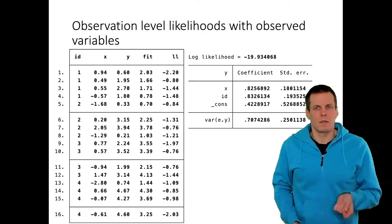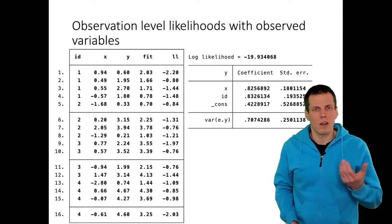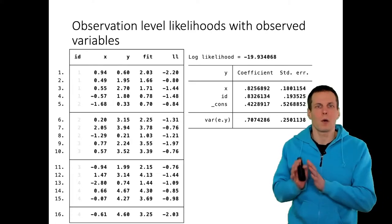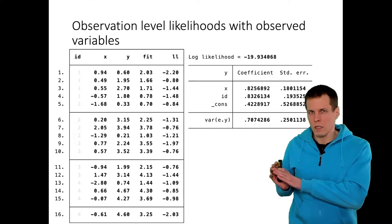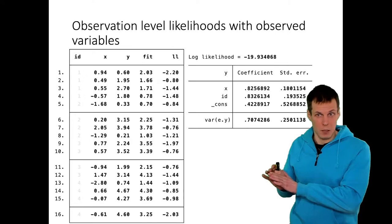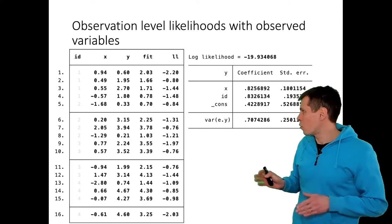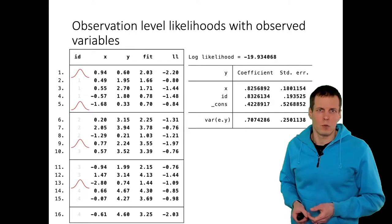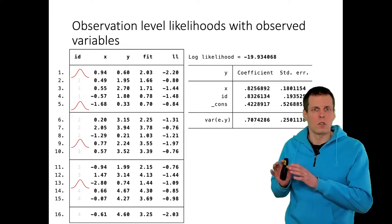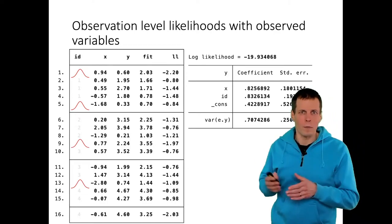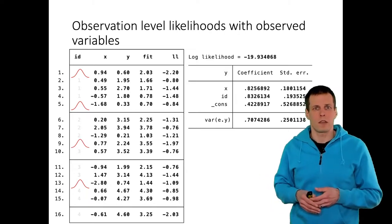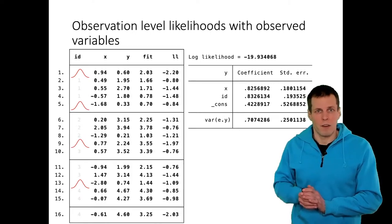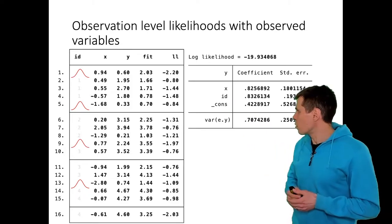Problems begin when we don't observe the ID — we assume there's some kind of group-level effect but don't have values for it. That might be unobserved heterogeneity in econometrics or a latent variable in factor analysis. So what do we do? We can make an assumption that the ID is normally distributed. We pretty much always assume that continuous unobserved or latent variables are normal, because that simplifies the calculations and we need some distributional assumption to calculate maximum likelihood estimates.